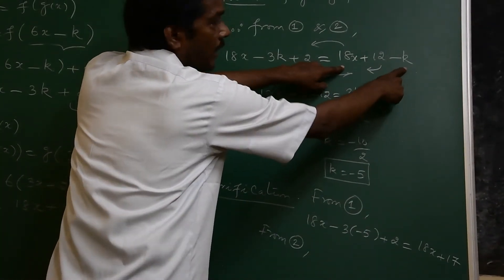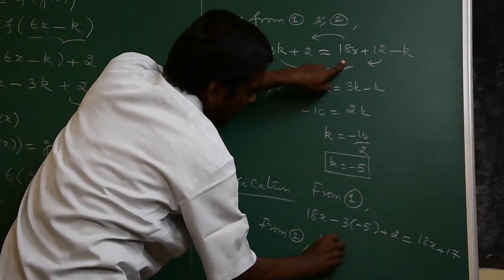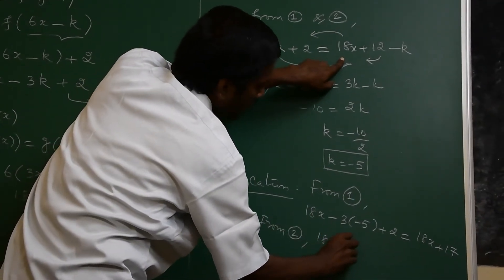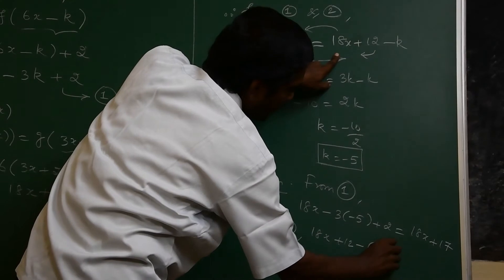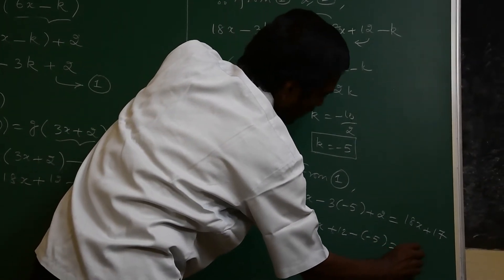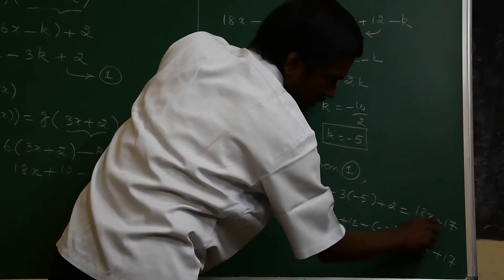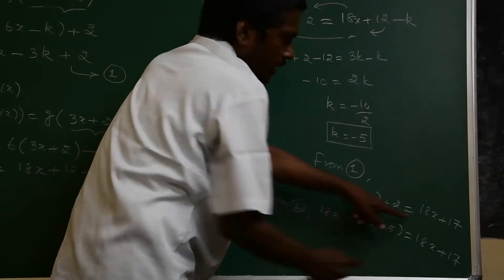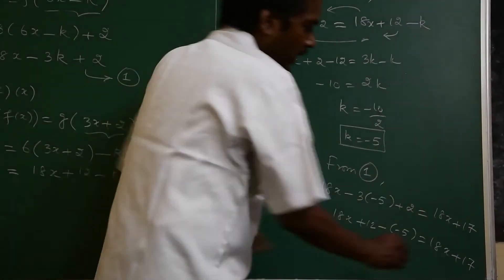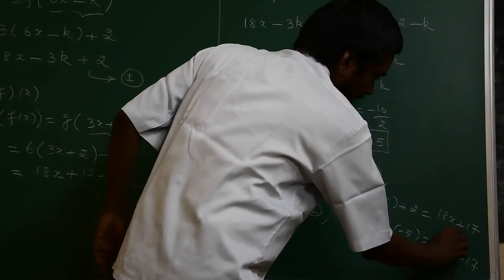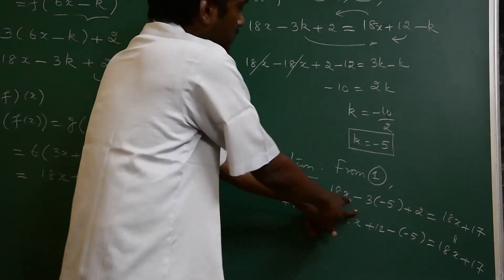Substituting k equal to minus 5 into g composite f: 18x plus 12 minus 5, which gives 18x plus 7. This is the second equation result.